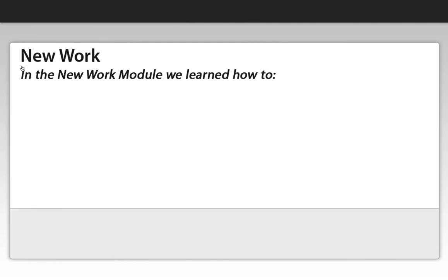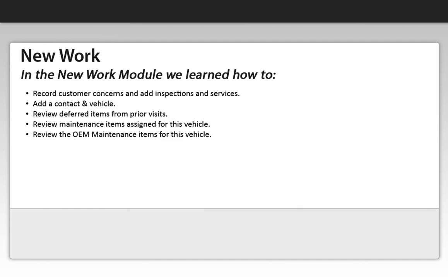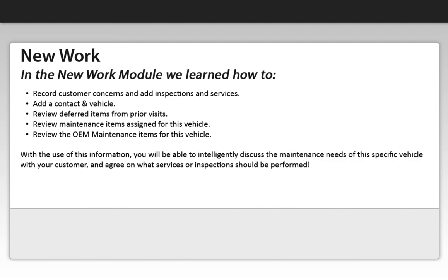And that concludes the new work module. In the new work module we learned how to: record customer concerns and add inspections and services, add a contact and vehicle, review deferred items from prior visits, review maintenance items assigned to the vehicle, review the OEM maintenance items for the vehicle, and with the use of this information you will be able to intelligently discuss the maintenance needs of this specific vehicle with your customer and agree on what services or inspections should be performed.